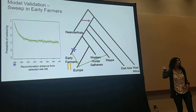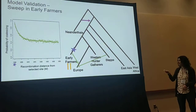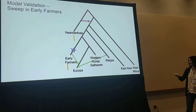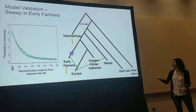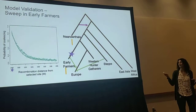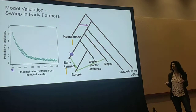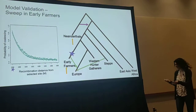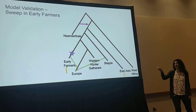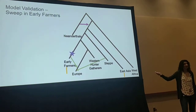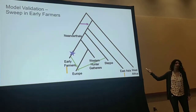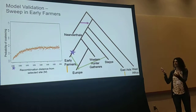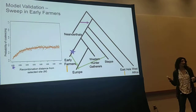Similarly, we can look at the probability of coalescing between alleles sampled in early farmers and Neanderthals — remember the selected allele came from Neanderthals. There's much greater coalescence closer to the selected site, so early farmers will look more similar to the Neanderthal sequence near the selected site. We can also look between the selected early farmer population and East Asians that did not experience selection. Since the Neanderthal allele is at very low frequency in East Asians, closer to the selected site their sequences will be much more different than we'd expect in the neutral case.